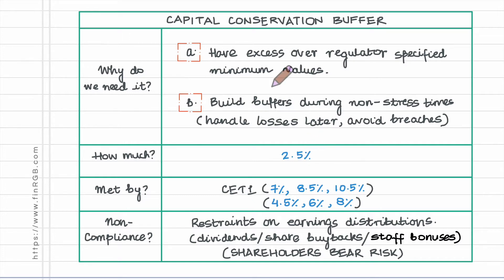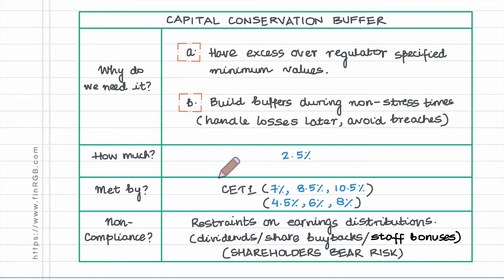How is this requirement met? The requirement for the capital conservation buffer is met by holding additional core equity tier one capital.